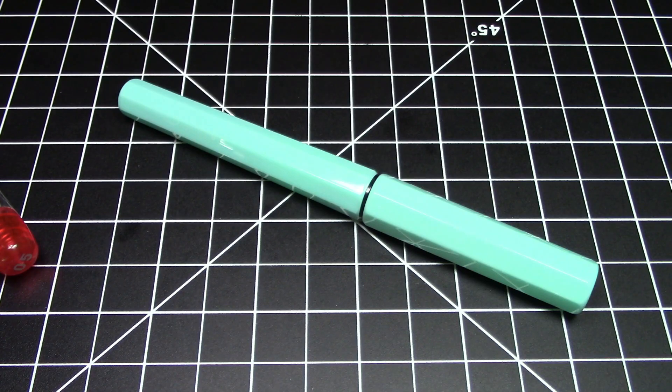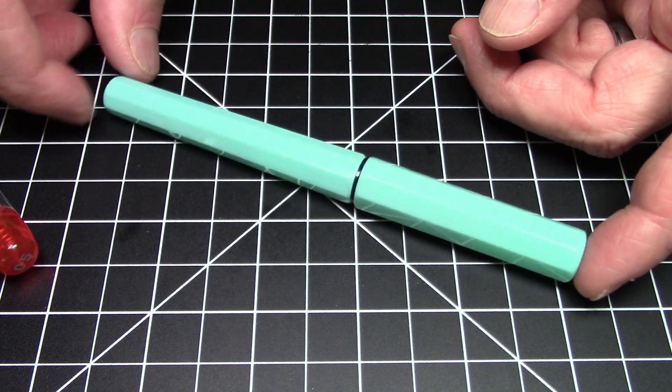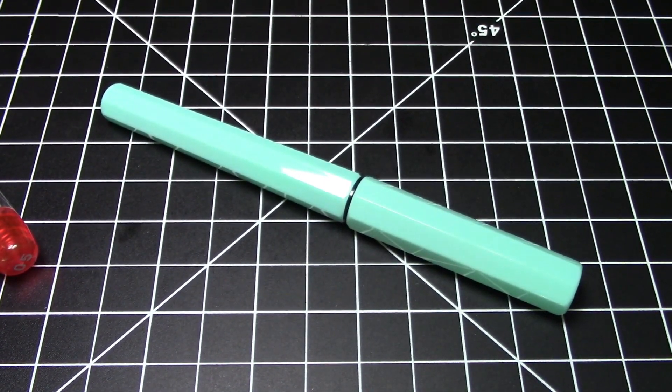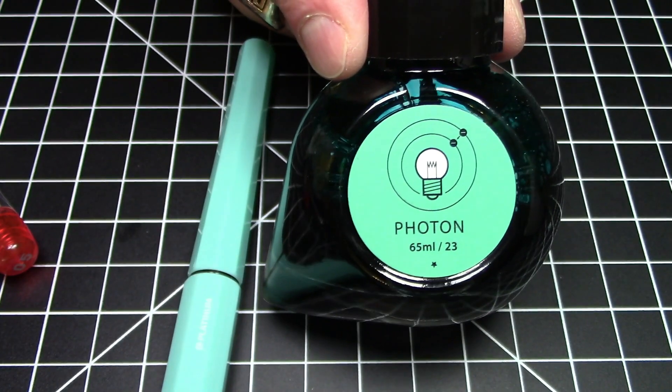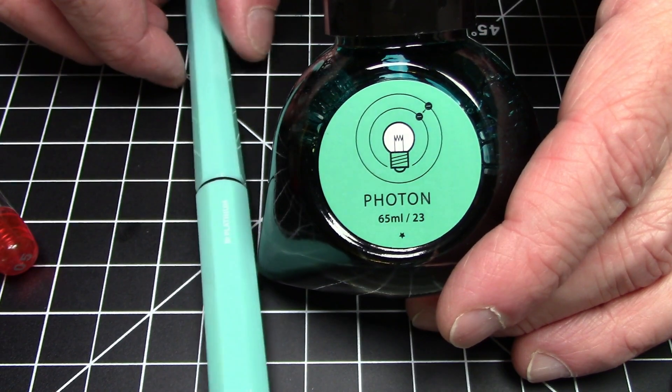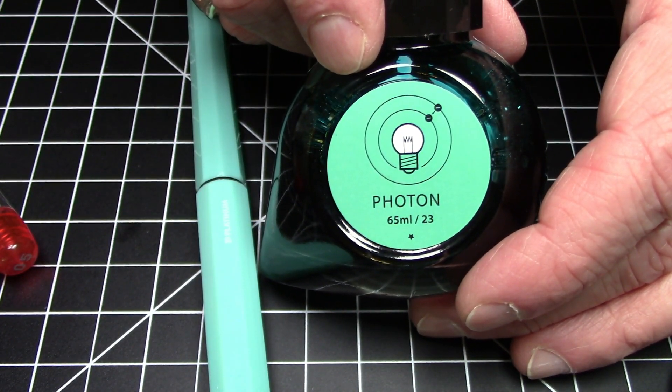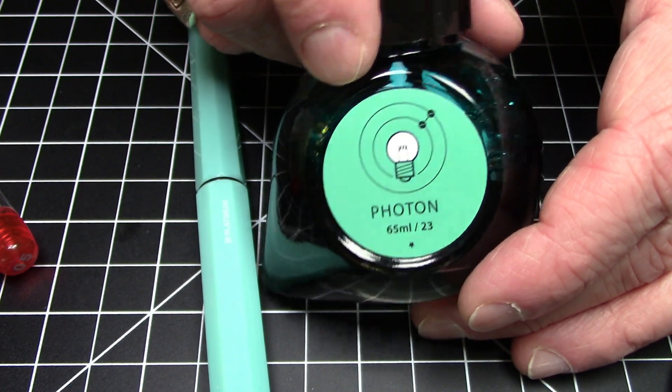So I guess the only next thing would be to ink this pen up and get going on the writing. Okay. For inking this, I'm going to pair it with colorburst photon. I think this is going to match. Okay. Not perfectly, but I think it'll compliment it well, plus I have a really nice big bottle of this. So we can get going with inking that up.